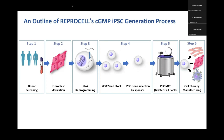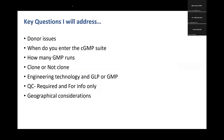Today I'll focus on the first five steps of this process. The key questions I'll address include donor issues, when to enter a CGMP suite, how many CGMP runs you need, whether to use a clone, engineering technologies, whether materials are GMP or GLP, what QC is required, and any specific geographical considerations. I'll use the ReproCell method to try to address these issues.